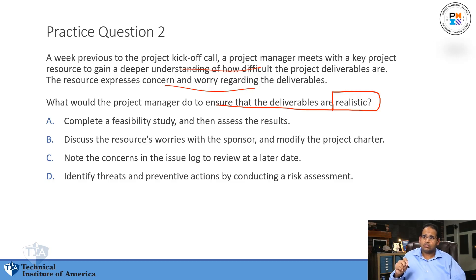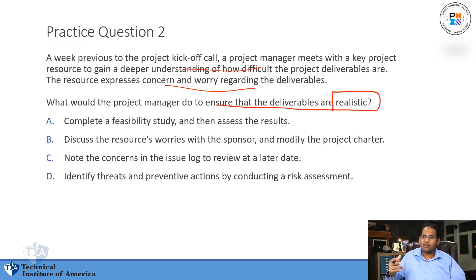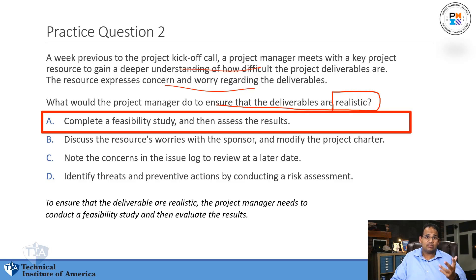A: Complete a feasibility study and then assess the results. B: Discuss the resource's worries with the sponsor and modify the project charter. C: Note the concerns in the issue log and review at a later date. D: Identify threats and preventive actions by conducting a risk assessment. The answer is A — conduct a feasibility study and then assess the results.